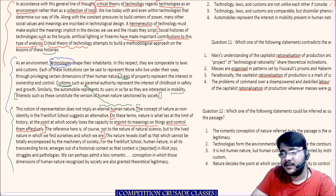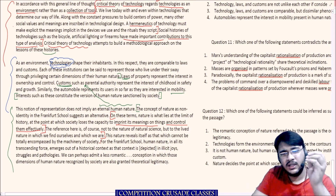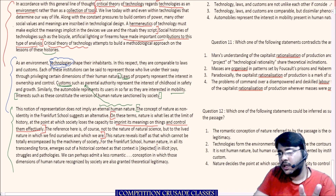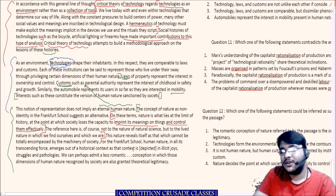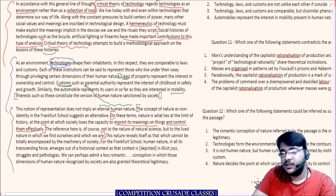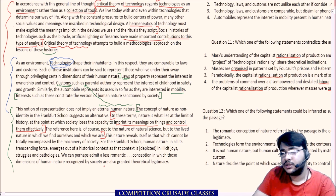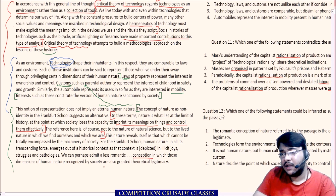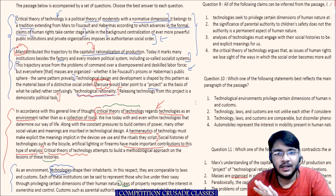This nature reveals itself as that which cannot be totally encompassed by the machinery of society. For the Frankfurt School, human nature in all its transcending force emerges out of historical context as depicted in illicit joys, struggles, and pathologies. We can perhaps admit a less romantic conception in which those dimensions of human nature recognized by society are also granted theoretical legitimacy.